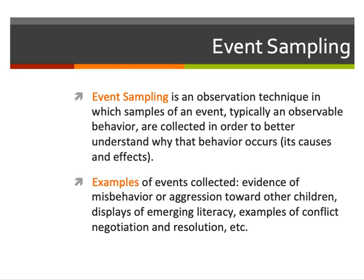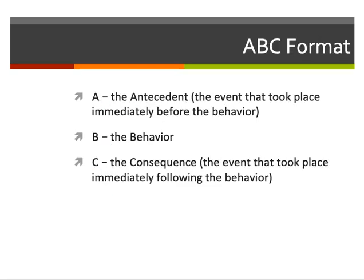For event sampling we are going to use the ABC format. The ABC format is easy to remember because of the acronym: A stands for the antecedent, or the event that occurred immediately before the behavior happened. B stands for the behavior itself that we want to observe. And C stands for the consequence, or the events that took place immediately after the behavior was observed.